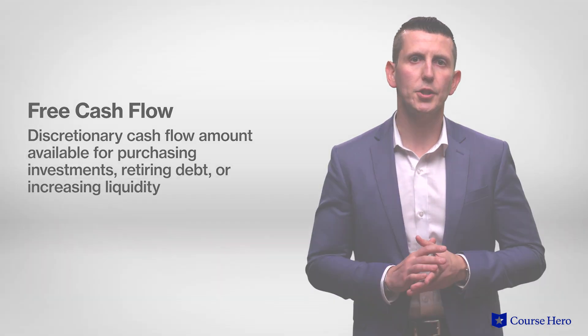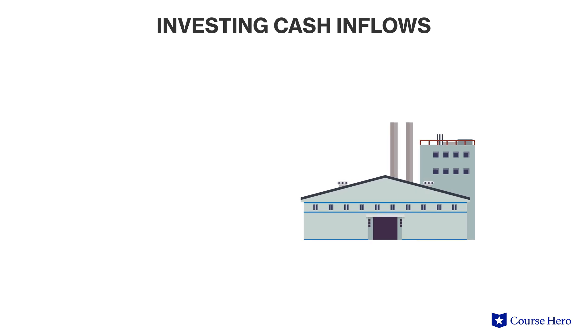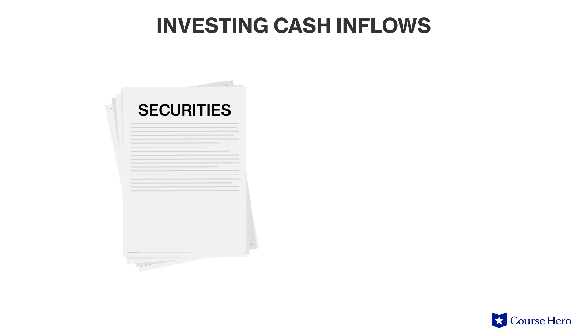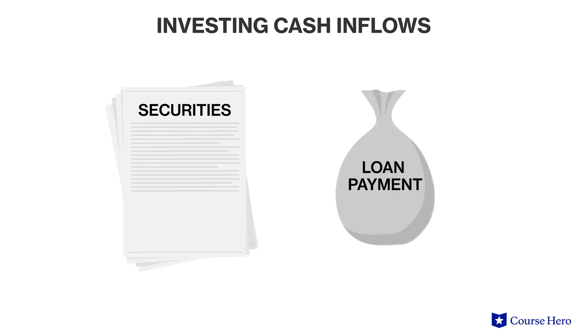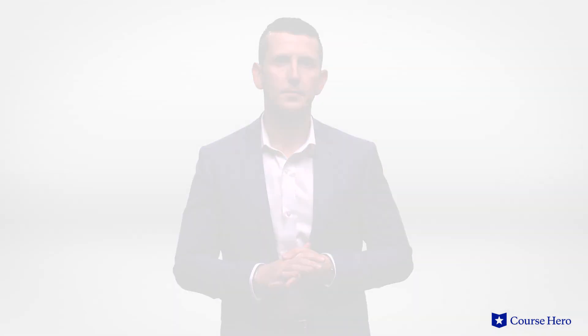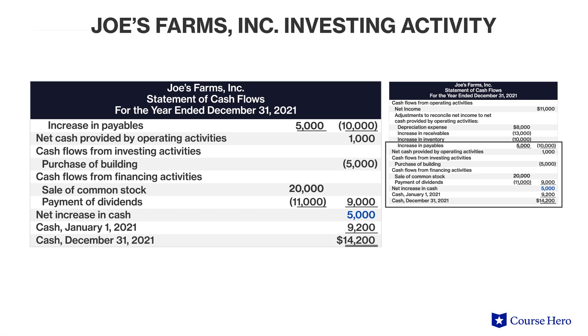Investing cash inflows for this section include cash from the sale of property, plant, and equipment, cash from the sale of debt or equity securities of other entities, and cash from the collection of principal on loans to other entities. Investing cash outflows include cash used to purchase property, plant, and equipment, cash used to purchase debt or equity securities of other entities, and cash used to make loans to other entities. For this specific company, the only investing activity in this period was $5,000 of cash spent to purchase a building.